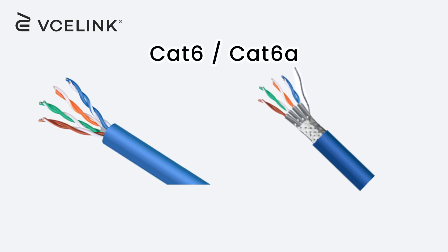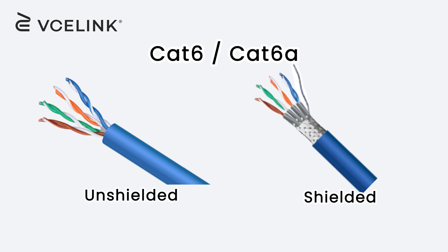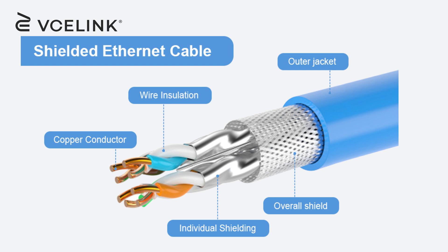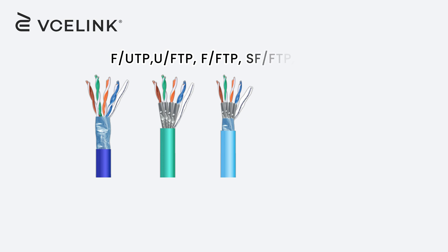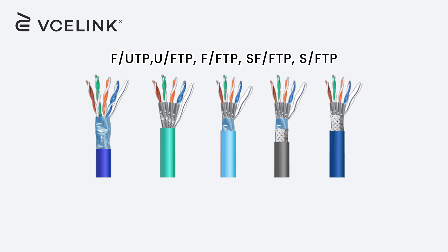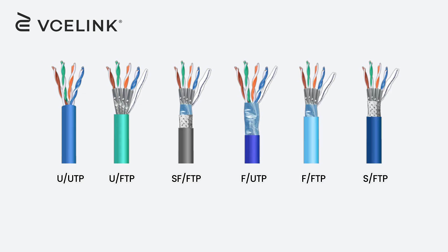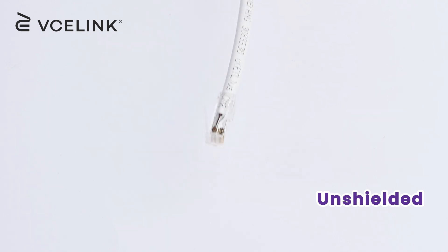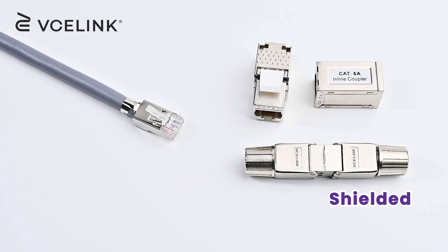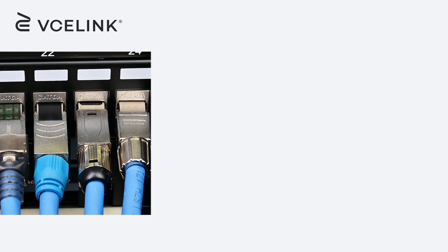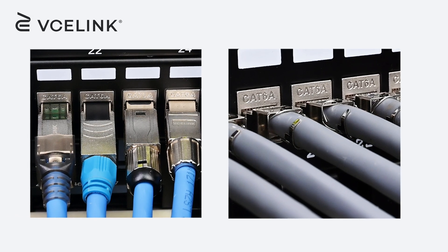Both CAT 6 and CAT 6A Ethernet cables can be shielded or unshielded. Shielded cables usually feature an outer shielding structure around each twisted pair or all pairs. Based on different applications, there are various levels of shielding such as FUTP, UFTP, FFTP, SFUTP, SFTP, and so on. Check out the following examples of different types of Ethernet cables. Once you have chosen shielded cables, you should pair them with shielded RJ45 connectors, keystone jacks, and patch panels for perfect data transmission.